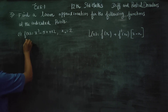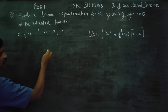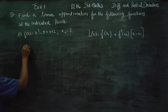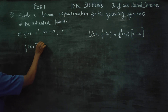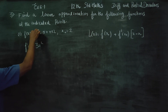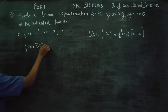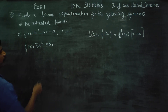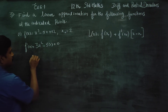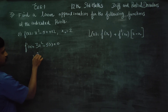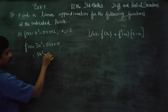First, we find f(x) and then f'(x). To find f'(x), we differentiate: the derivative of x³ is 3x², differentiating 5x gives 1, and differentiating the constant gives 0. Therefore f'(x) = 3x² - 5.